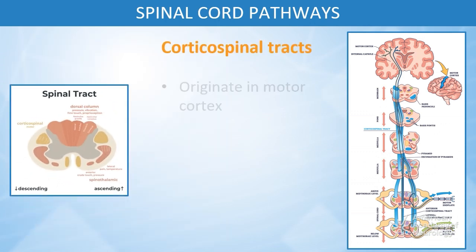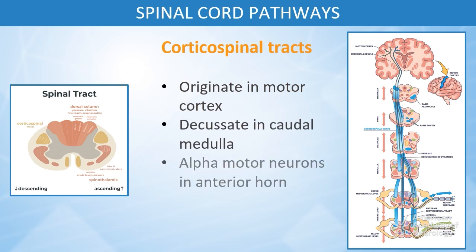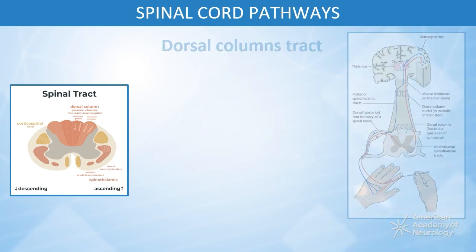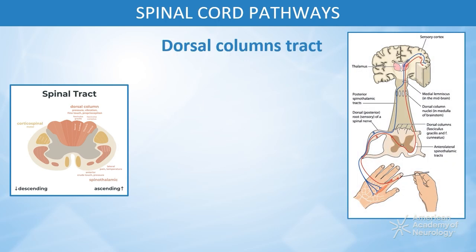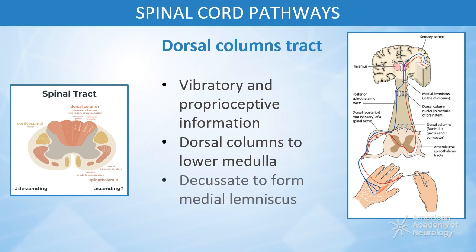The corticospinal tracts originate in the motor cortex and decussate in the caudal medulla before descending in the lateral part of the spinal cord to synapse with alpha motor neurons in the anterior horn. Next, the dorsal column and medial lemniscus pathways convey vibratory, touch, and proprioceptive information from the periphery to the dorsal horn of the spinal cord and then through the dorsal columns to the lower medulla, where they decussate to form the medial lemniscus.